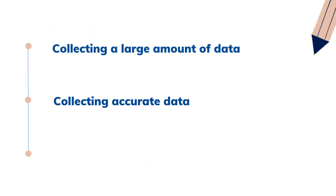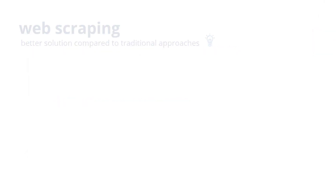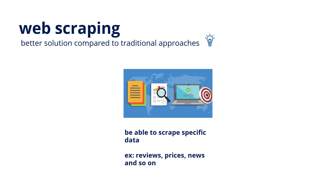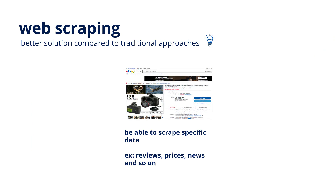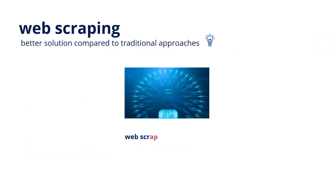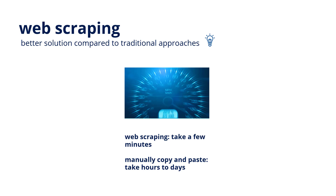Collecting accurate data: with web scraping, you get exactly the data that you want. For instance, on an e-commerce webpage that shows an abundance of product information, you may only need the price and reviews of a specific type of camera — web scraping can be used to target and fetch only the data you need, giving you a clean data set. Scraping speed also matters: a job that may take hours or days for manual copying and pasting may only take a few minutes to complete using web scraping.